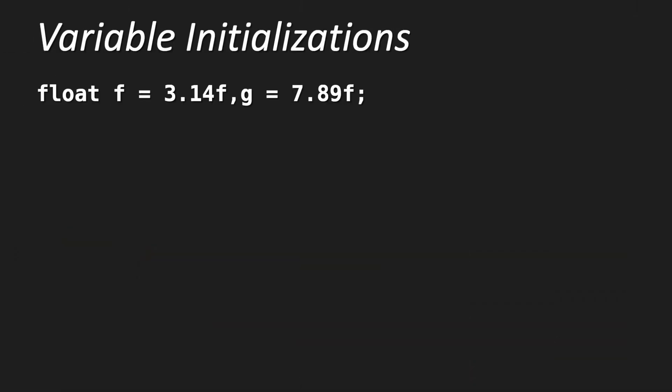You can do this, but I do not recommend it. In my experience, it's easier to give a separate line for each initialization and declaration — it just makes your code much more readable. It's just personal taste, but I think it's much better to have it on a separate line. And of course, you can do this with all the other data types as well — for instance float f 3.14f, 7.89f semicolon — and with double and char too.